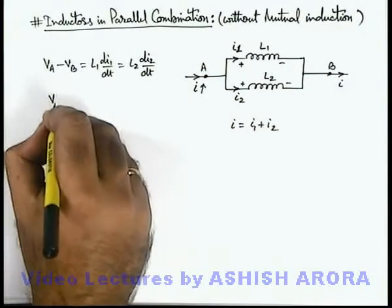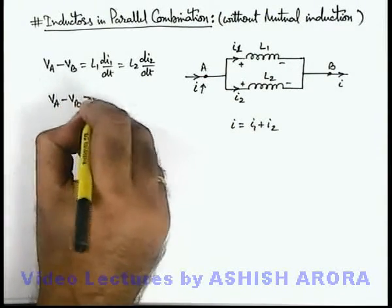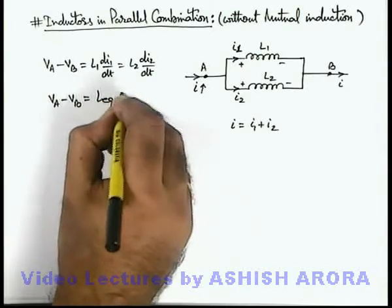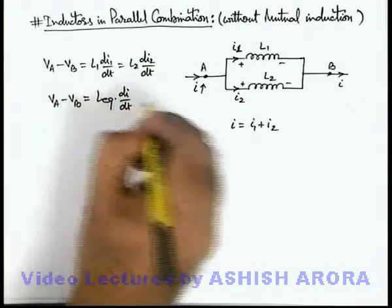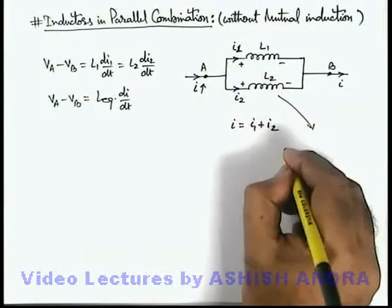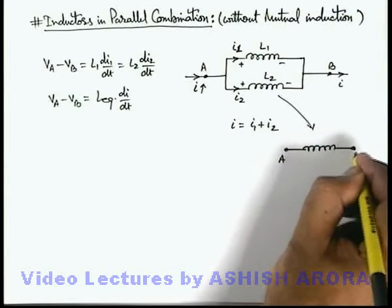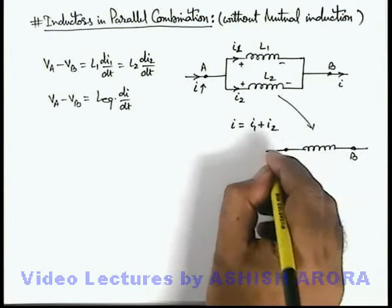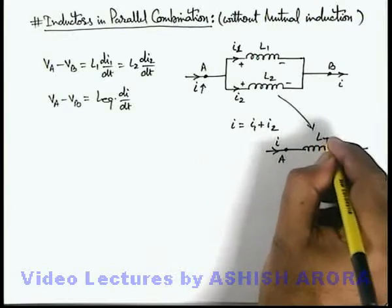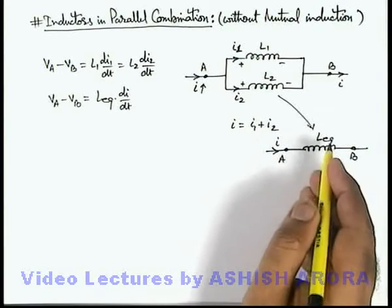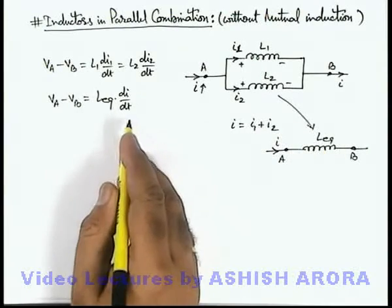And the same VA minus VB we can write as Leq multiplied by di/dt if the whole system is replaced by a single inductor between terminals A and B. Now in this situation, if it is Leq directly, it is given as Leq di/dt.